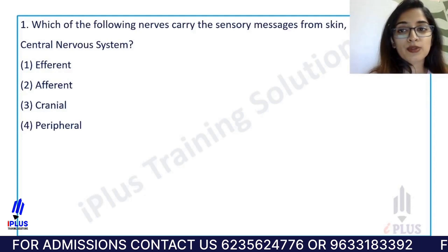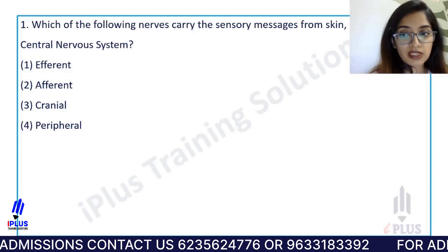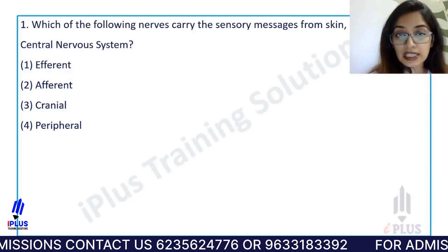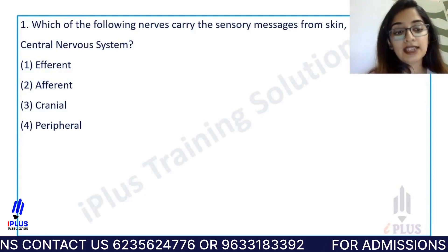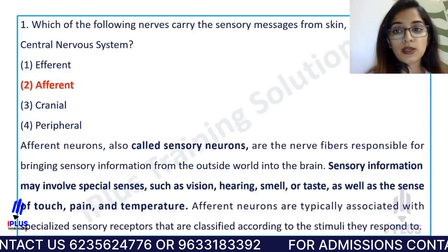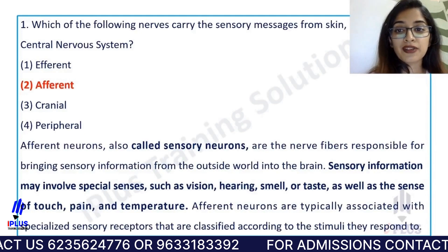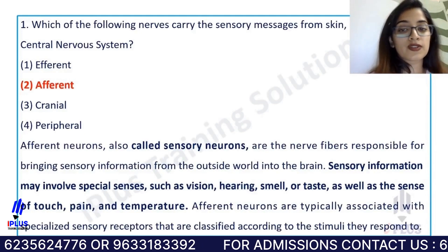The options are: afferent, cranial, peripheral. The right option is afferent neurons and afferent nerves.